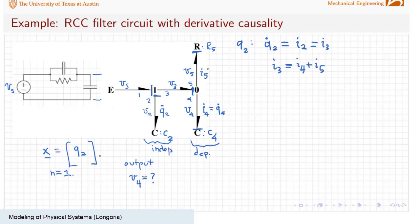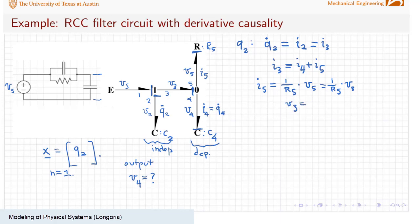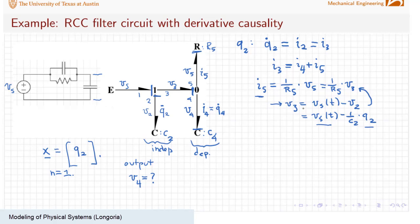Let's find I5 first, because that's going to be a little easier — it's just going to come from this resistor. I5 is one over R5 times V5, because I have a linear resistor here. What is V5? V5 is the voltage causally coming from V3. So one over R5. You can see now V3 is equal to the difference between Vs(t) less V2. I like that, because V2 is a function of state. So I've reduced this unknown V3 into input and state.